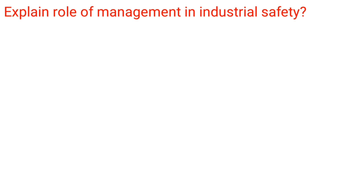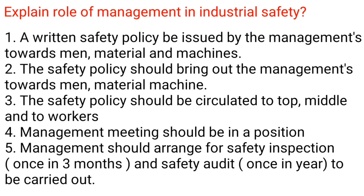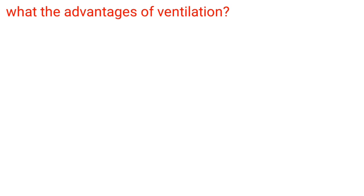Explain the role of management in industrial safety: 1. A written safety policy should be issued by management towards men, material, and machines. 2. The safety policy should be circulated to top, middle, and workers. 3. Management meetings should be held. 4. Management should arrange for safety inspection once in three months and a safety audit once a year.